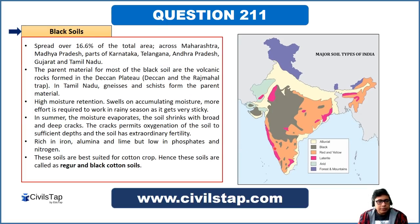Black soils are spread over 16.6% of India's total land area across Maharashtra, Madhya Pradesh, parts of Karnataka, Telangana, Andhra Pradesh, Gujarat, and Tamil Nadu. The parent material for most black soils is the volcanic rocks formed in the Deccan Plateau and Rajmahal Trap. This area — Maharashtra, Gujarat, southern Madhya Pradesh, and northern Karnataka — is known as the Deccan Trap, where black soils originate from volcanic rocks.